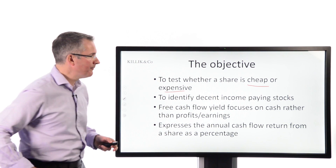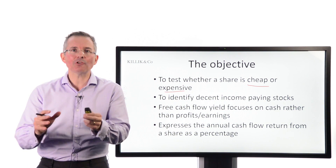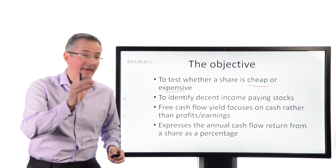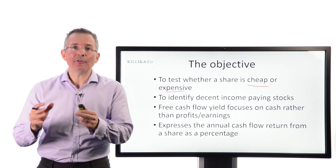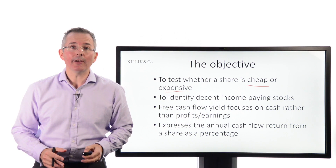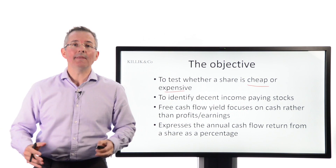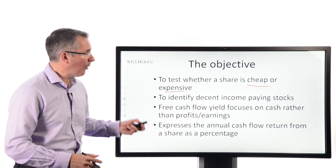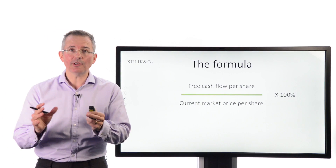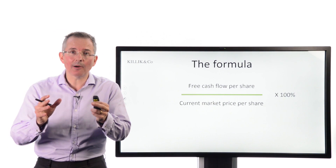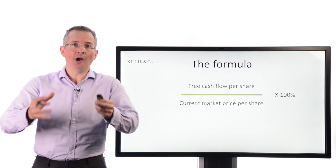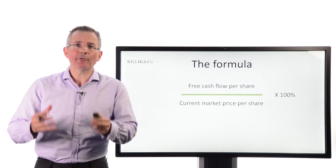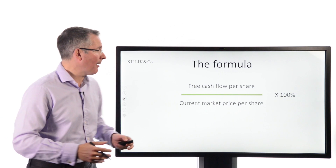What we're going to try and do is express the annual cash flow return from a business as a percentage of the current share price. That gives you a yield, and the answer is going to be some kind of percentage. If you were crunching the numbers — it does require a bit of homework — this doesn't just jump out of a set of accounts at you, but plenty of websites will publish the number.